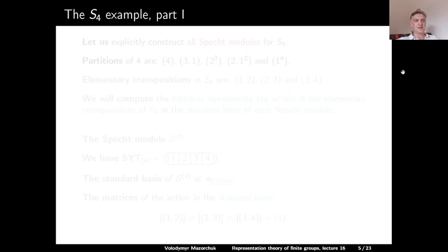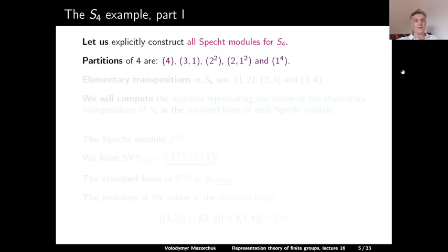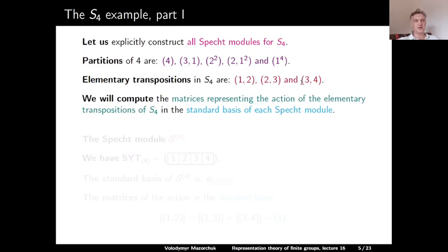Let us now consider an explicit example of the symmetric group S4. We will explicitly construct all Specht modules for S4 and compute the action of the elementary transpositions on the standard basis elements. There are five partitions of 4: the partitions 4, 3+1, 2+2, 2+1+1, and 1+1+1+1. The elementary transpositions in S4 are (1,2), (2,3), and (3,4). We will compute the matrices representing the action of these elementary transpositions in the standard basis of each Specht module. Let us start with the Specht module for partition 4.